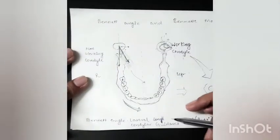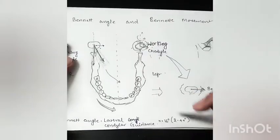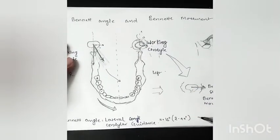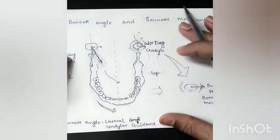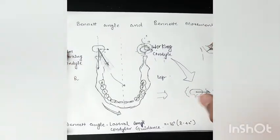Bennett angle is also called lateral condylar guidance and it may vary from 2 to 44 degrees. Generally it is 16 degrees. So these are Bennett angle and Bennett movement. Thank you.